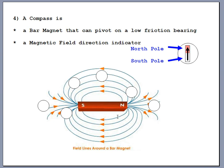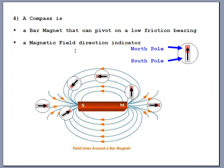If you bring a bunch of compasses near a big bar magnet, they'll be affected by the magnetic field and rotate to align with the magnetic field lines shown in the background. The south end of a compass is attracted to the north end of the bar magnet, and the north end of the compass is repelled — that's why it points in the direction of the magnetic field. Magnetic field comes out of the north end of a bar magnet, spreads wide, and wraps around to go back into the south end.